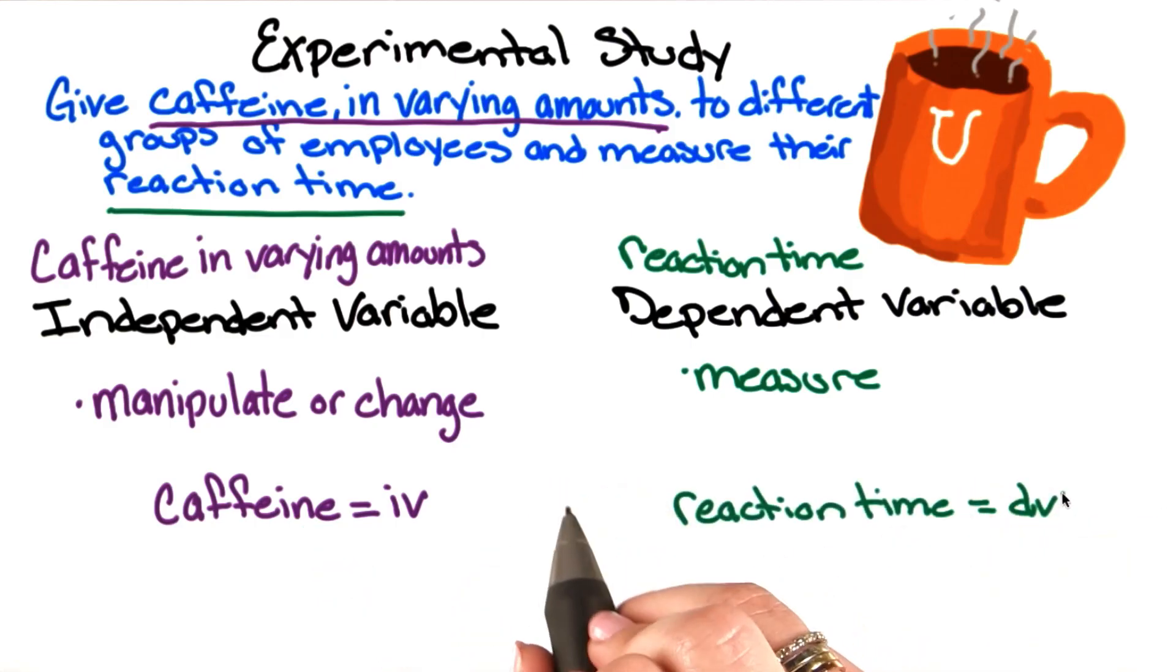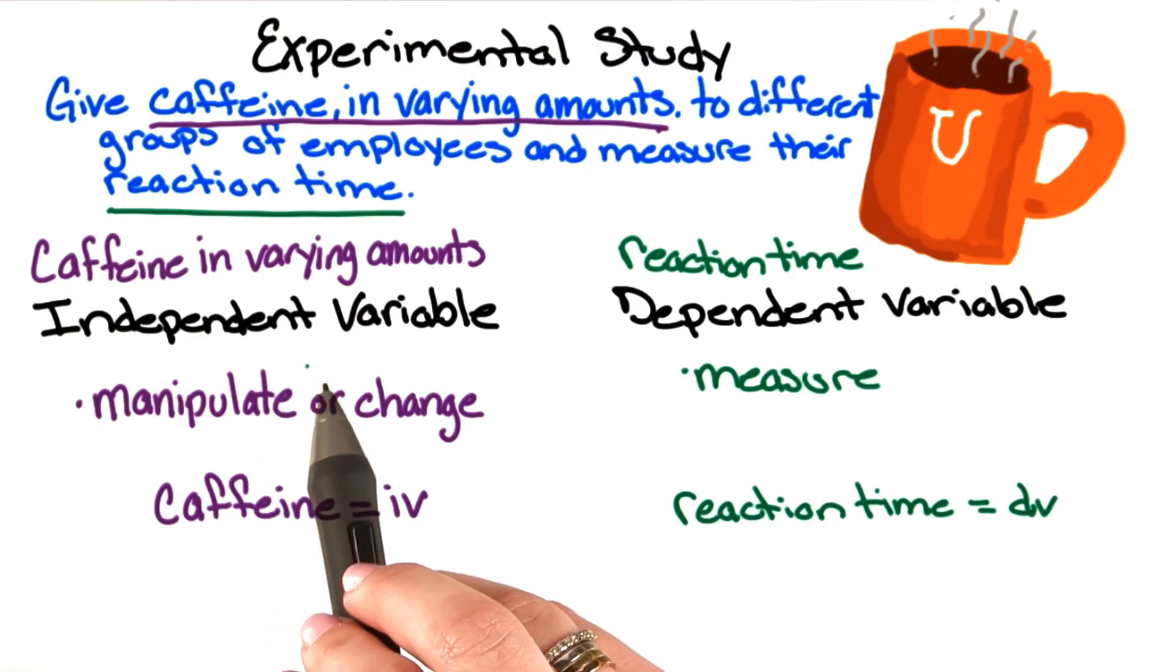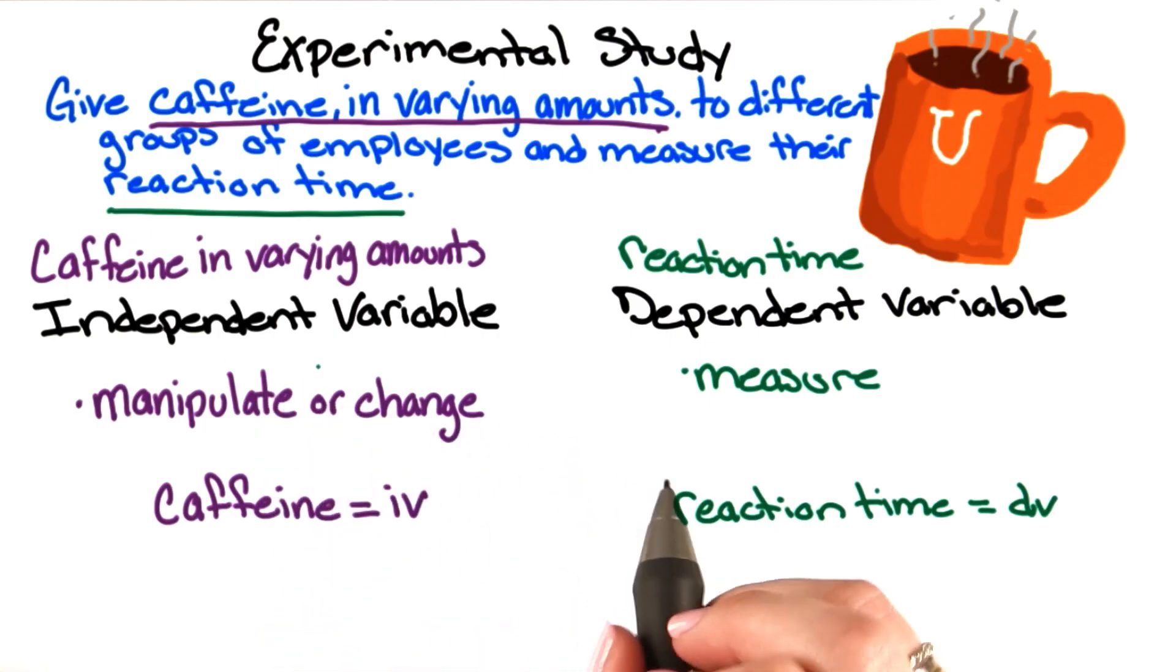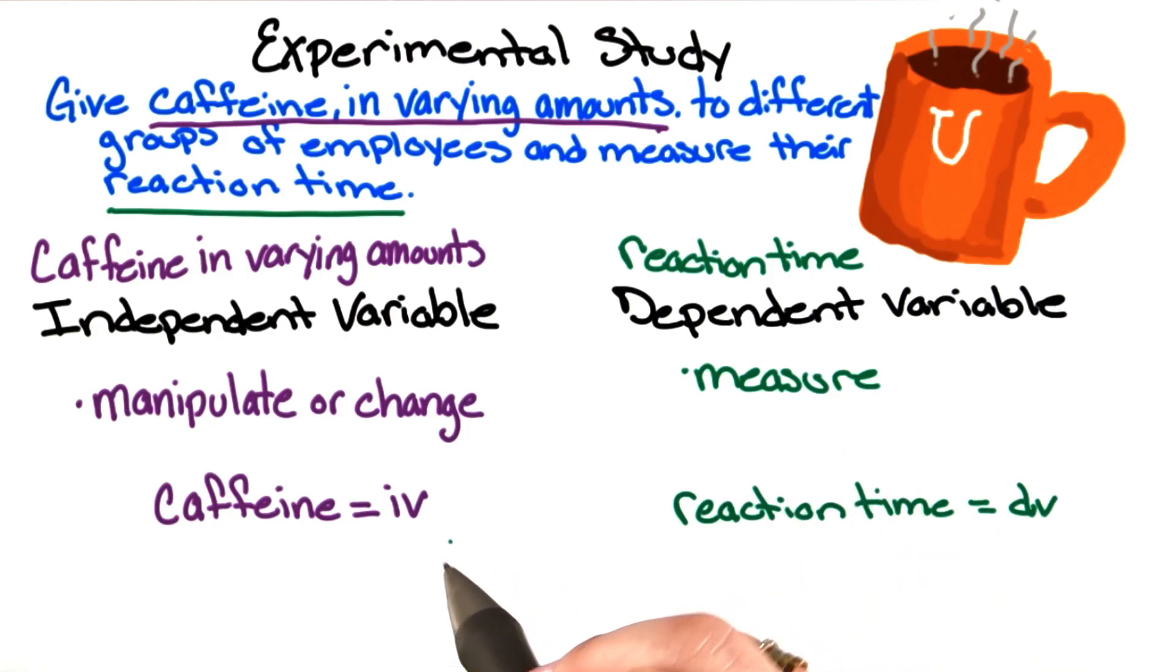In order to make a causal statement, we need to make sure that the IV, or independent variable, is what causes the change in the dependent variable. In our case, we need to know that caffeine is what actually causes the change in reaction time.